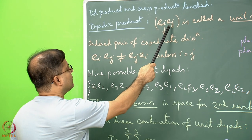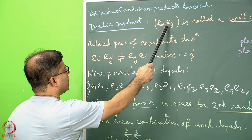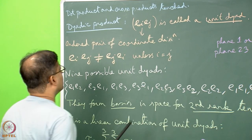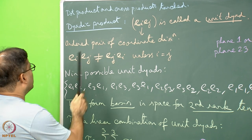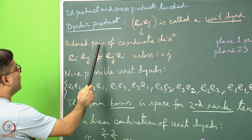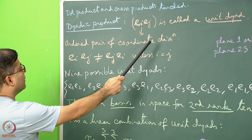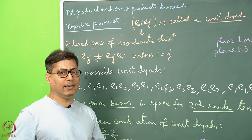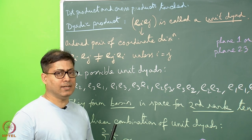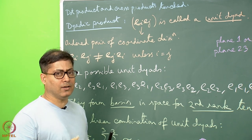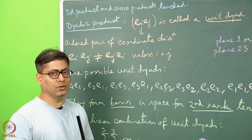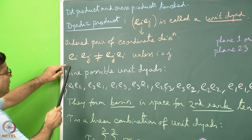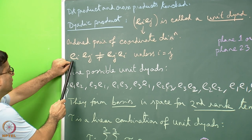EI, EJ written side by side is called a unit dyad, and EI, EJ is an ordered pair of coordinate directions. EI, EJ and EK can be considered as unit vectors along I, J and K — mutually orthogonal directions.